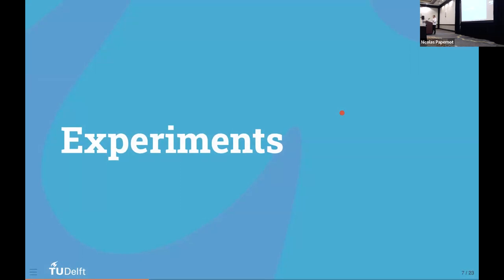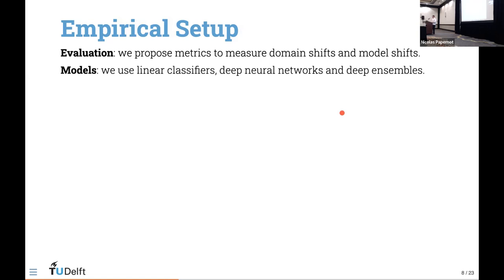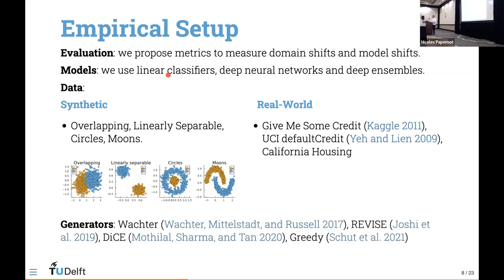This is our proof of concept — now let's take it to the data. Our first challenge was to devise metrics to actually measure these domain and model shifts; Alexander and Carol came up with some really good ideas there, which I'm sure they're happy to discuss during the poster session. We use both black-box models — deep neural networks and deep ensembles — as well as linear classifiers, and we apply this to both synthetic data of various complexity levels and real-world datasets from the economics and finance domain. For counterfactual generators we start with the baseline proposed by Wachter, also use REVISE (which uses a surrogate generative model), DICE for diverse counterfactuals, and a greedy approach that works with Bayesian classifiers — our deep ensembles.